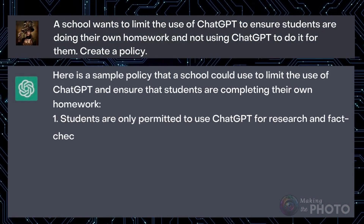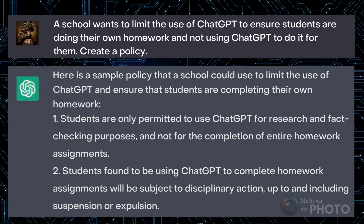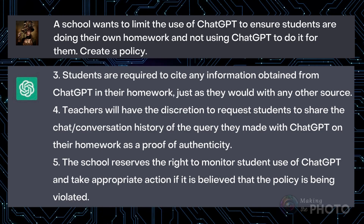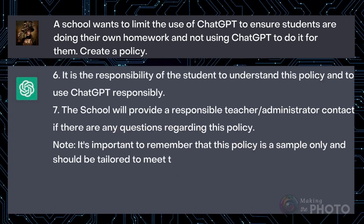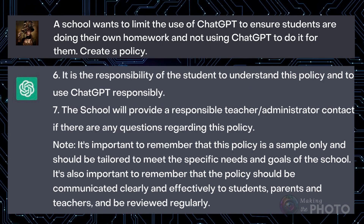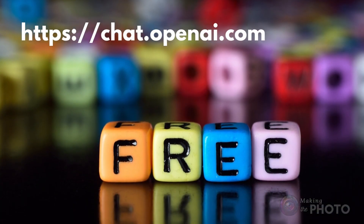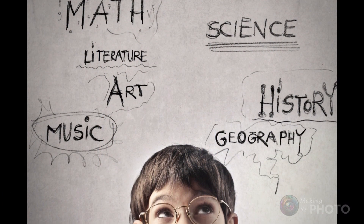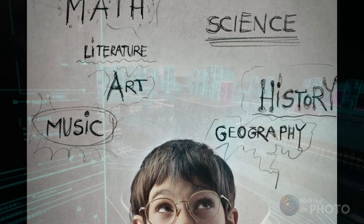Schools will likely develop an AI policy that fits with their other academic dishonesty policies. What might that policy look like? Here are some suggestions from ChatGPT — it seems fitting for ChatGPT to write its own policy. At the time of this video, ChatGPT was free, though it's likely to soon become a paid subscription. Try ChatGPT for yourself in your own discipline. Ask it questions and treat it like a student, and see what you get.